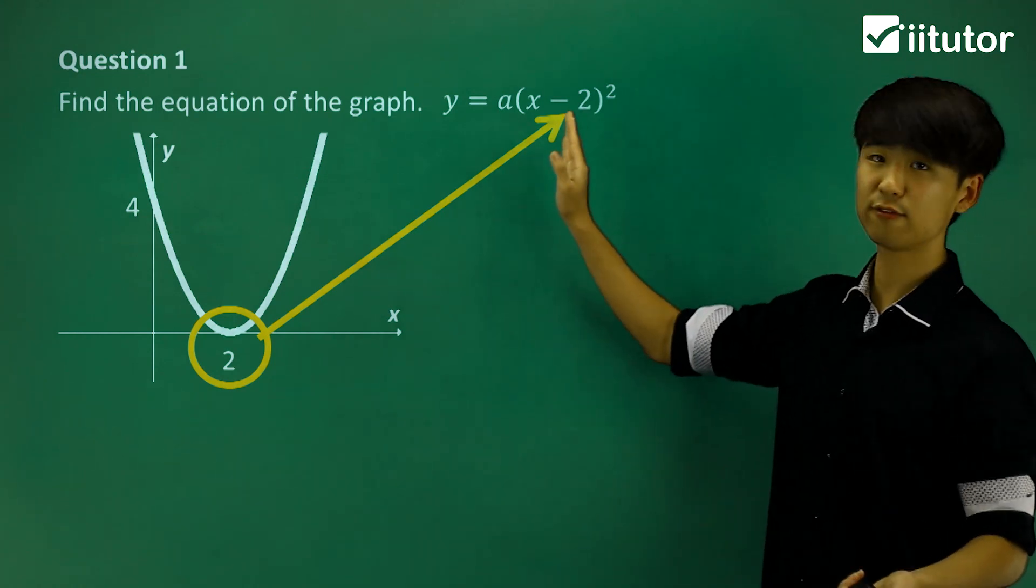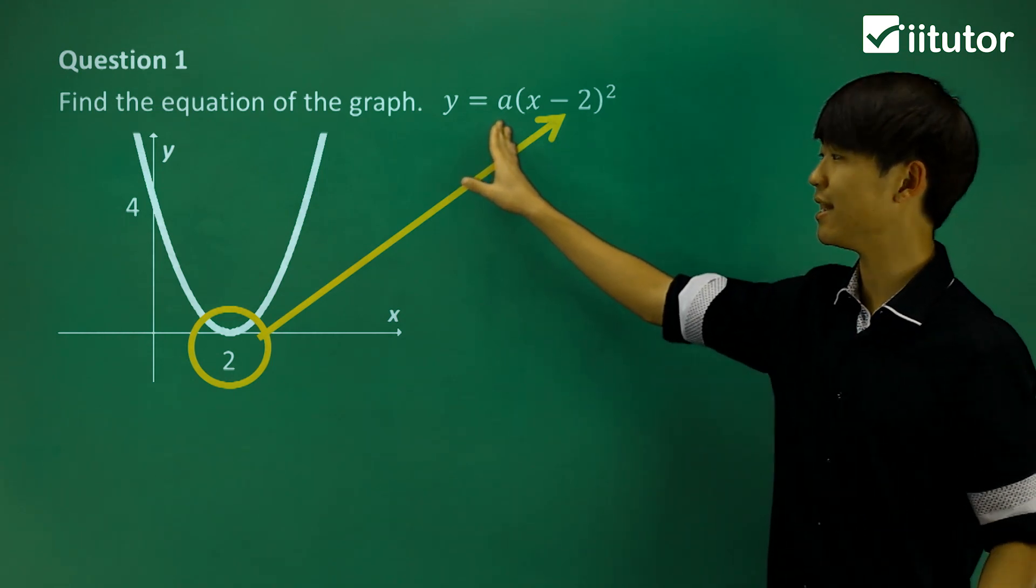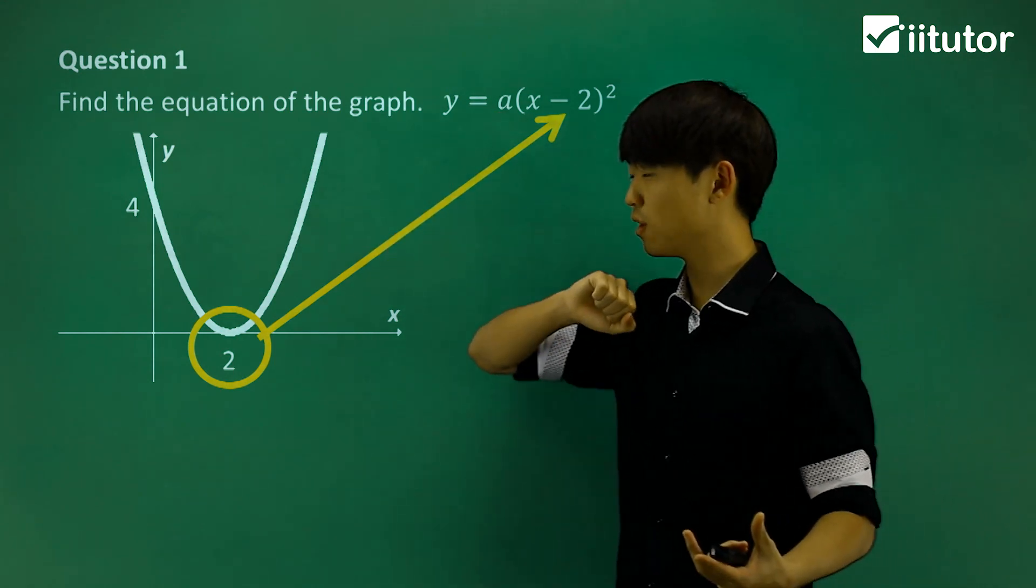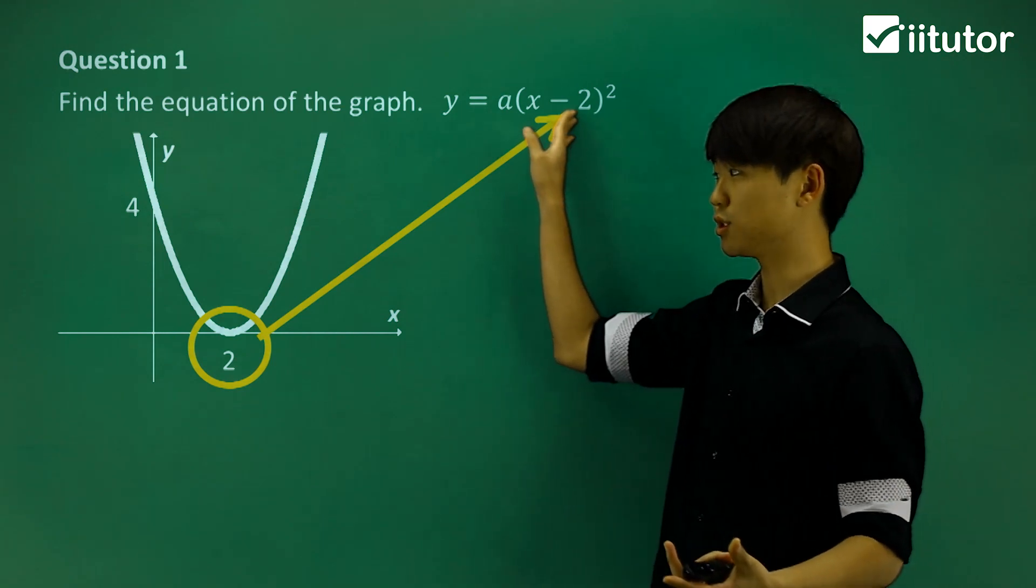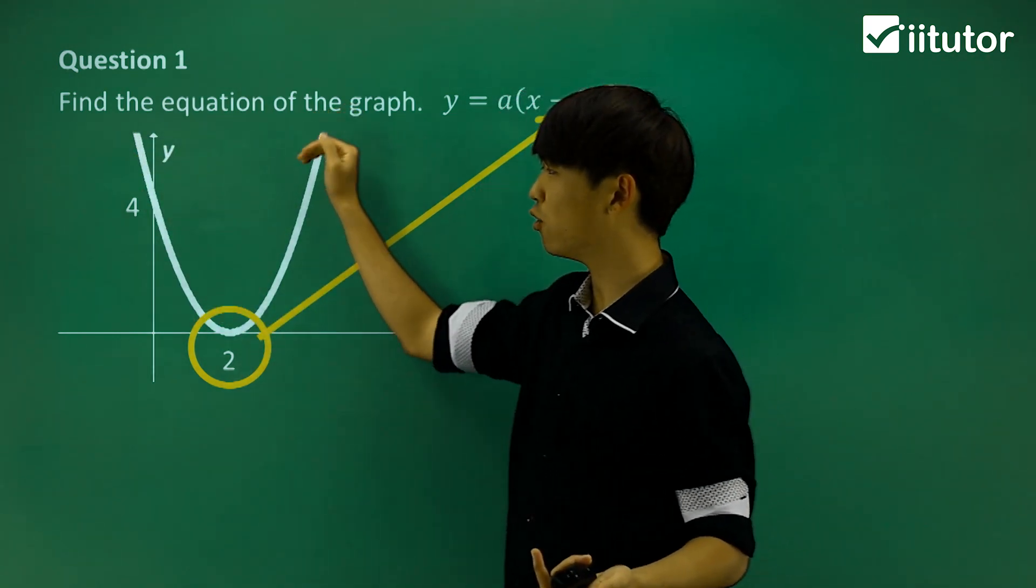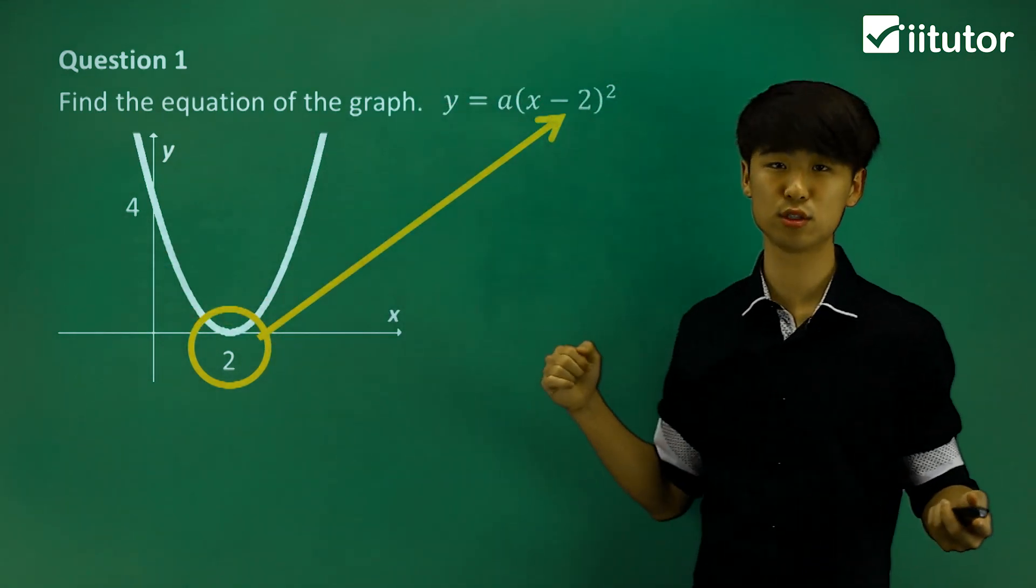But we're not done yet. We have to find this value of this constant number a. Now what this a is talking about is it describes the shape of this parabola. All this is telling me is that it passes through at a double root, x is equal to 2. But the graph might look like the one we have right now, or it might be a lot flatter, but still go through the double root at x equals 2.